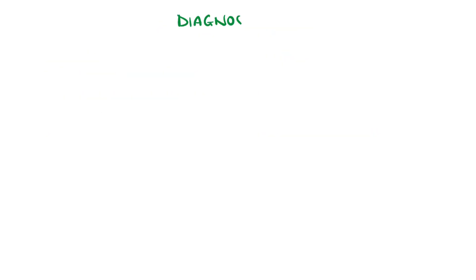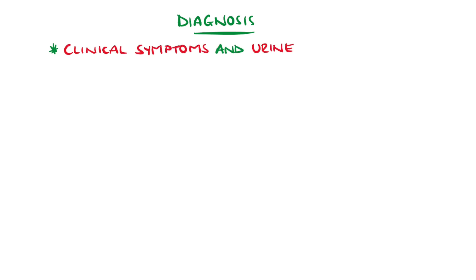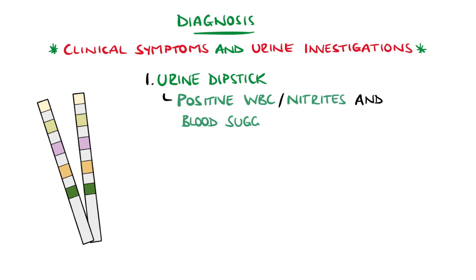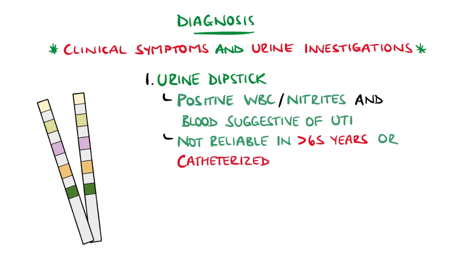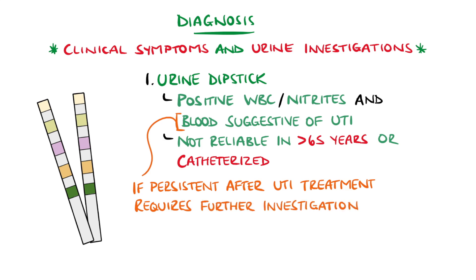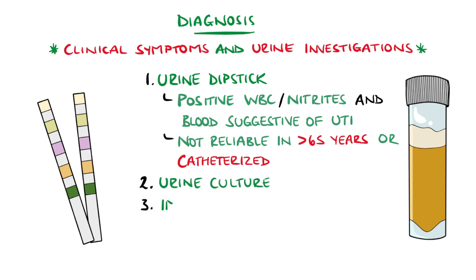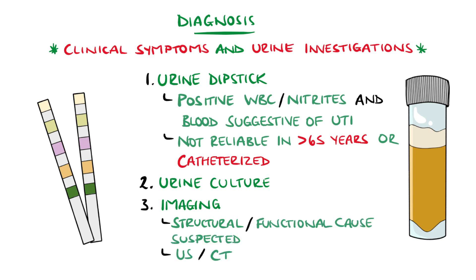In general, the diagnosis is made based on the presence of clinical symptoms, supported by urine investigations. Urine dipstick is useful as the presence of white blood cells or nitrites, and blood is suggestive of UTI, but it is not reliable in those over the age of 65 or those who are catheterized, due to the likelihood of asymptomatic bacteriuria. Persistent microscopic hematuria after resolution of the infection will require further investigation. A culture is useful to confirm the presence of bacteria and to provide antibiotic sensitivities. Imaging is indicated in some cases, such as if structural or functional causes are suspected, with possible options including ultrasound or CT.